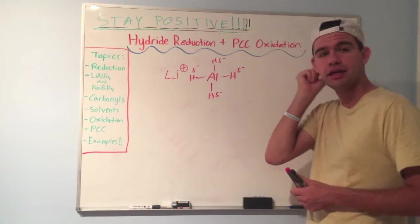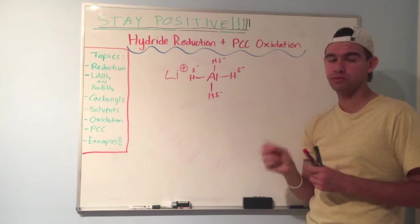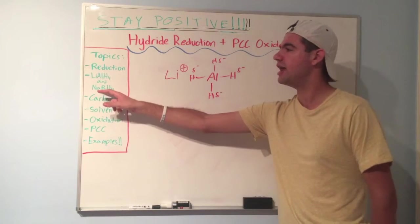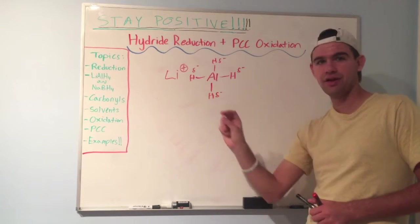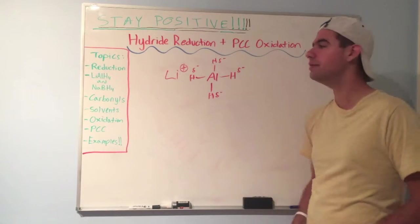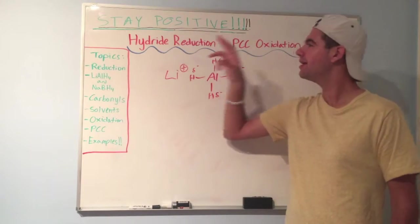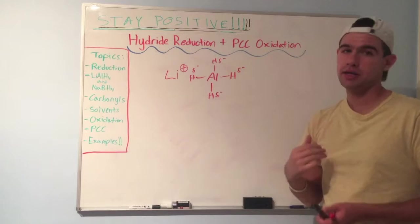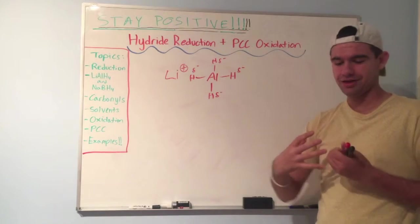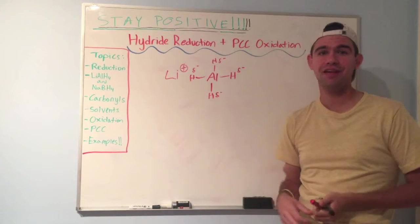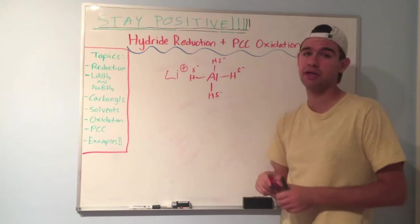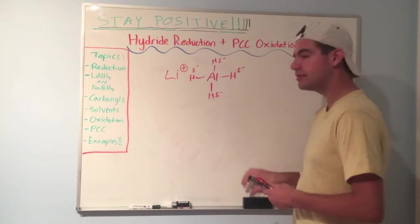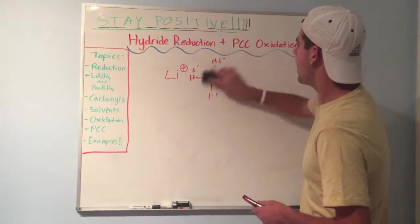And because of that, you cannot put it in a polar protic solvent. Remember we said sodium borohydride has to be in a polar protic solvent for that extra deprotonation, right? Or it should be, ideally. LiAlH4 cannot be in a polar protic. The dish will literally explode in your face if you were to do this in real life. So you need to keep it in a polar aprotic solvent. So let's see a mechanism involving LiAlH4.